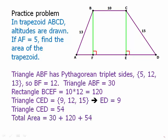So the whole area is going to be triangle plus rectangle plus triangle, 30 plus 120 plus 54, and that equals 204.